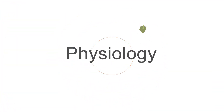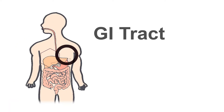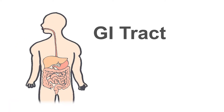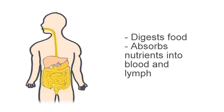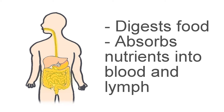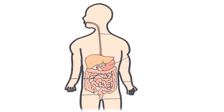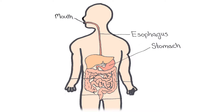Physiology. The gastrointestinal tract, also known as the alimentary canal, is the continuous muscular tube that winds through the body from mouth to anus. The GI tract digests food and absorbs the digestive fragments through its lining into the blood. The GI tract is composed of the mouth, pharynx, esophagus, stomach, small intestine, large intestine, and anus.